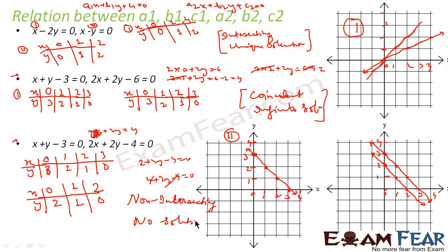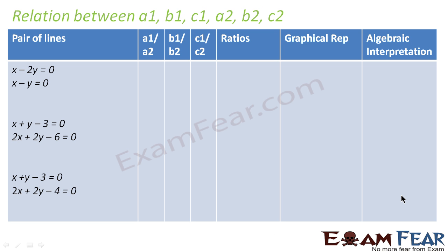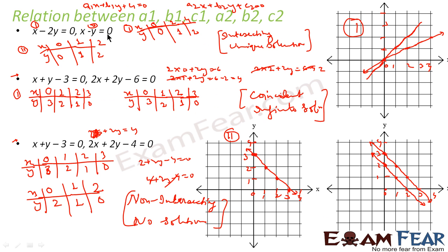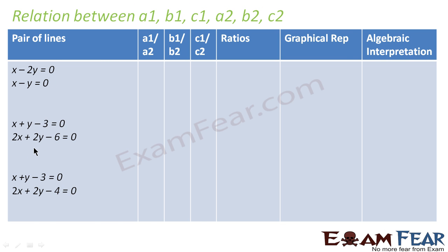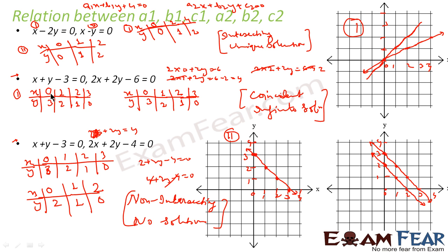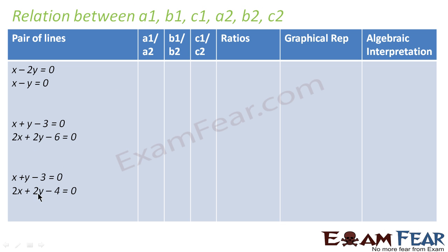Now I will use these values to derive the relationship. We have taken three pairs of equations. The first pair was intersecting with a unique solution, the second was coincident with infinite solutions, and the third was non-intersecting with no solution. These are the three sets of equations: x minus 2y equals 0 and x minus y equals 0; x plus y minus 3 equals 0 and 2x plus 2y minus 6 equals 0; x plus y minus 3 equals 0 and 2x plus 2y minus 4 equals 0.